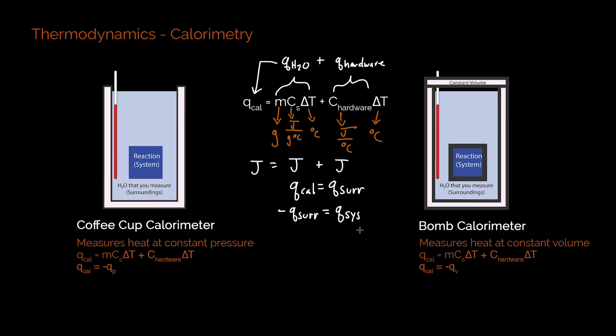From here, depending on the calorimeter that we're using, we're going to end up with one of two different values. The q of system can either give you qp, which would be heat at constant pressure, and this is actually equal to, by definition, delta h of that particular reaction.